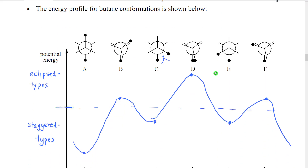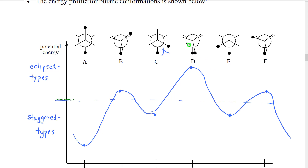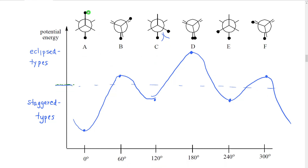We're now going to look at the energy profile for butane, which will look different from the energy profile for ethane. We start with conformation A, the anti conformation. In this conformation, we have the least amount of steric interactions because each large methyl group is adjacent to two small hydrogens, giving it the lowest potential energy.